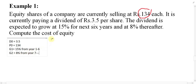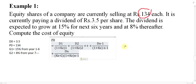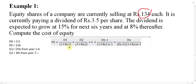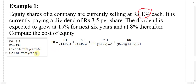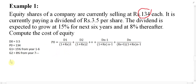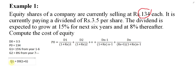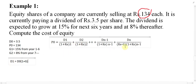To find what's needed, we apply the formula. Looking at the formula, we need D1, D2, D3, D4, D5, D6, and D7 — because the dividend grows at 15% for six years and then 8% thereafter. The formula to calculate each dividend is: D1 = D0 × (1 + G). We apply this to find all dividend values.